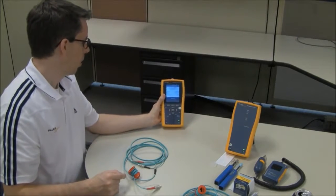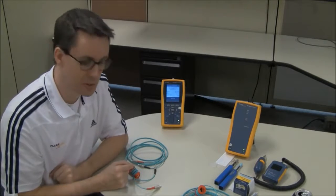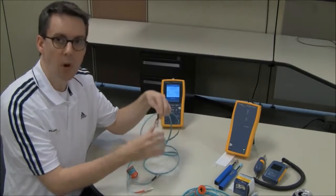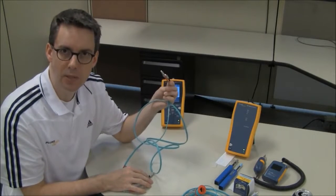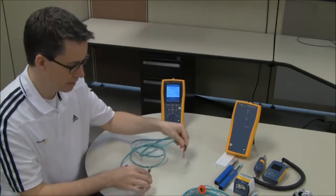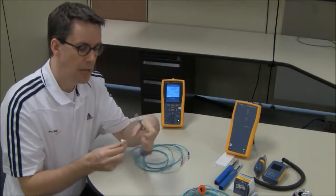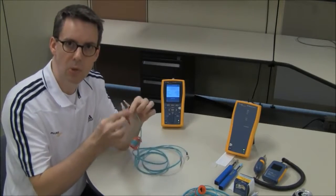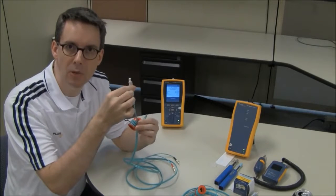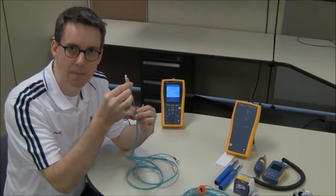In order to do a OneJumper reference, we need to be using hybrid test reference cords, or TRCs. They're hybrid because at one end we have duplex LC. We're testing duplex LC today. The other end is a little bit strange. We have LC, but we also have an SC connector with this red thing on it, which is called a mandrel, and it's critical that you use a mandrel, otherwise your readings are going to be pessimistic.